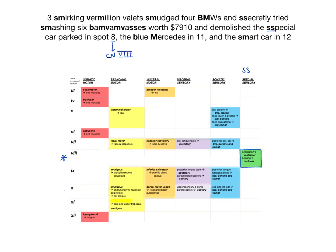Going back to the vestibulocochlear nerve — "demolished special car parked in spot 8" — this represents the vestibular and cochlear nuclei, which are both special sensory. This is the only cranial nerve nucleus that is special sensory, because special sensory refers to smell, taste, and hearing, and among cranial nuclei 3 through 12 in the brainstem, only cranial nerve 8 represents special hearing.